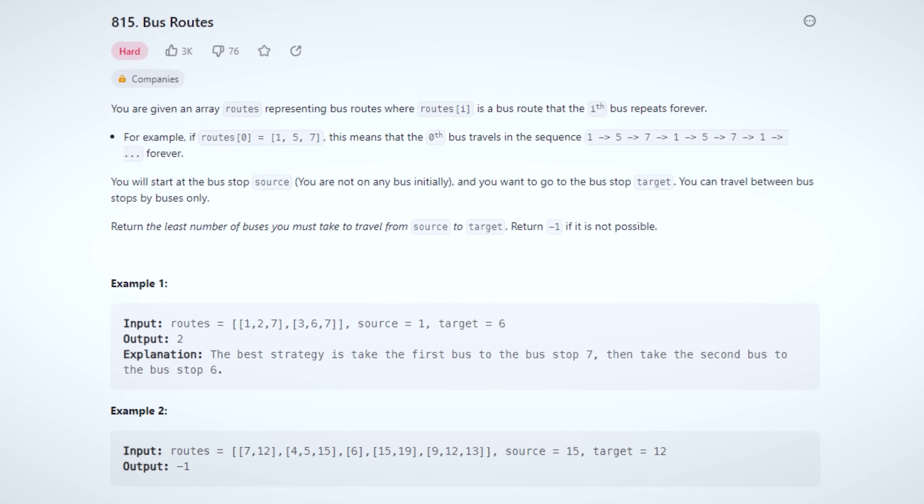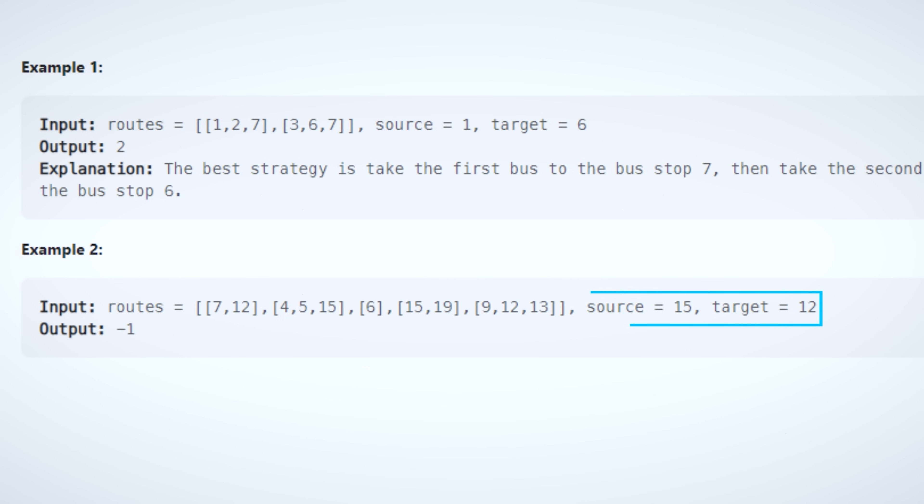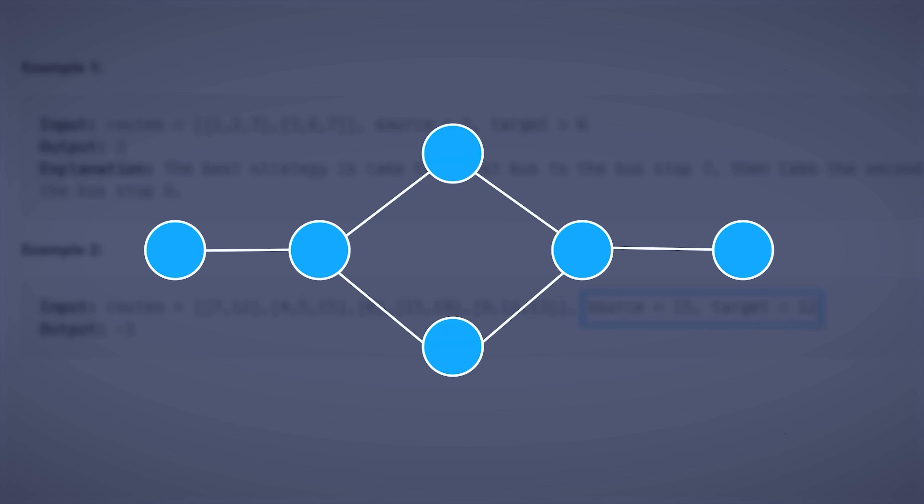For example, if you are given bus routes that go through different bus stops, and you need to find a route from stop number 15 to stop number 12, with the minimum number of bus changes, you should be thinking about graphs, because there is a clear relationship between entities: bus, bus stop, and route.